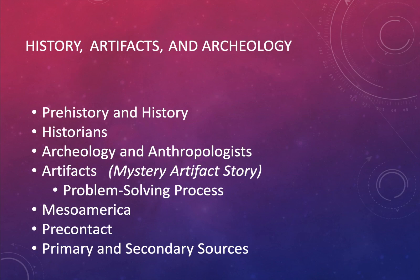Historians are people that study change over time. Archaeology and anthropologists work with artifacts — they look at different objects that were part of a culture to find out more information. Pre-contact refers to these different cultures before anyone from the Eastern Hemisphere made contact with them — before they met anyone from Europe. Primary sources are your best source; any object or record that was at the event. Anything told about that event later on is a secondary source.